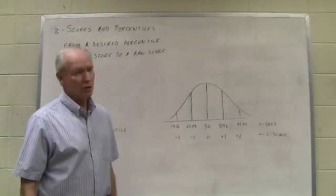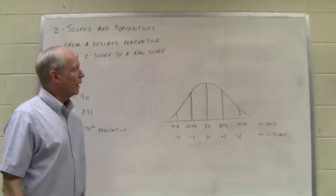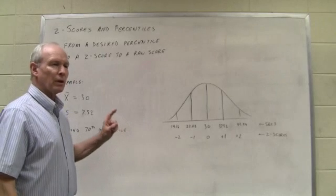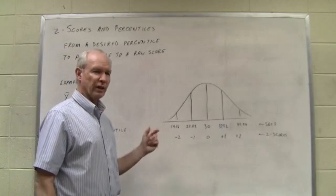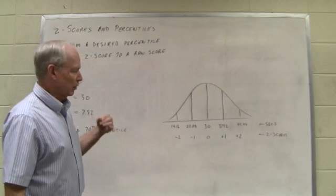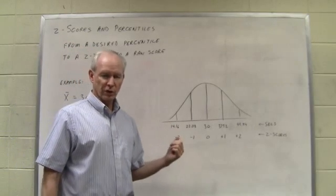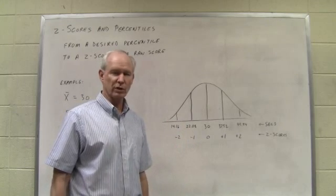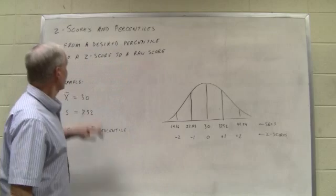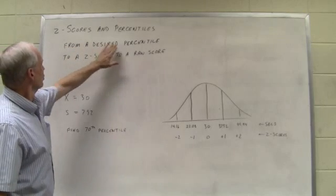In this module we're going to use z-scores once again. Last time we used these scores to find percentiles given a raw score. You'd first convert it to a z-score and then use the z and the table of the normal distribution to find the percentile. This time we want to go from a desired percentile to a z-score and then to a raw score.